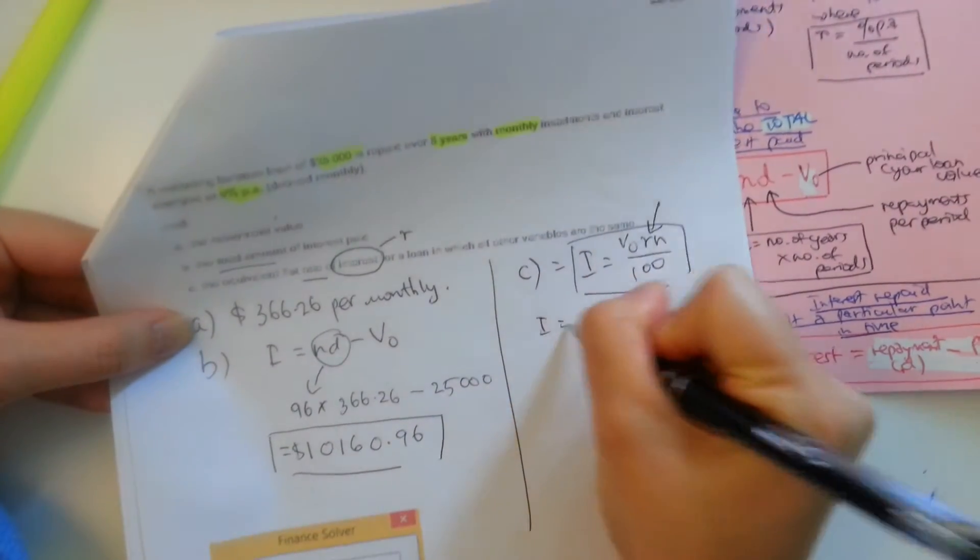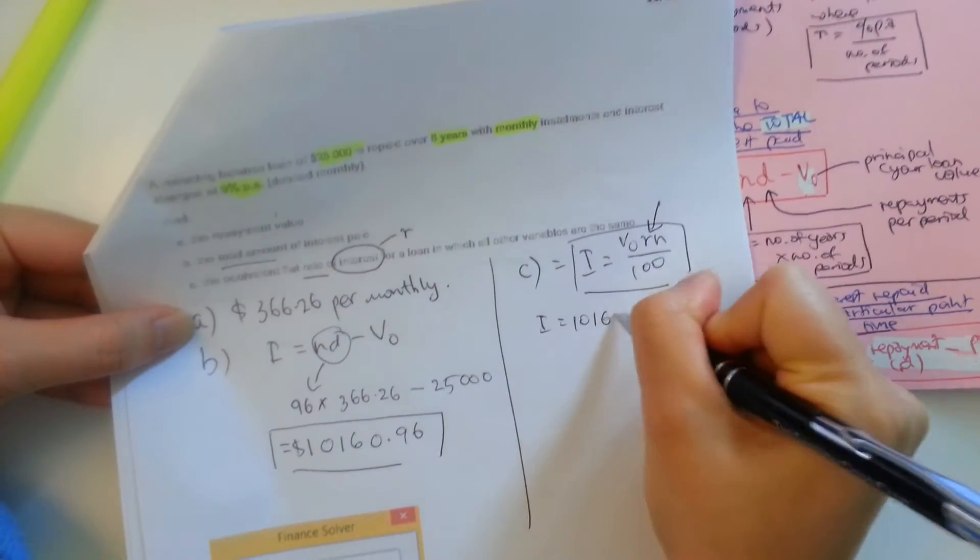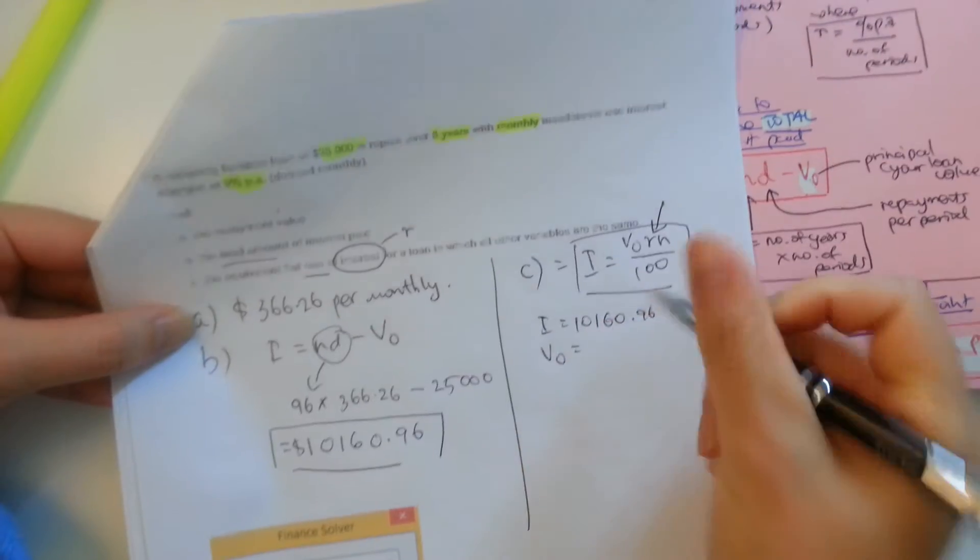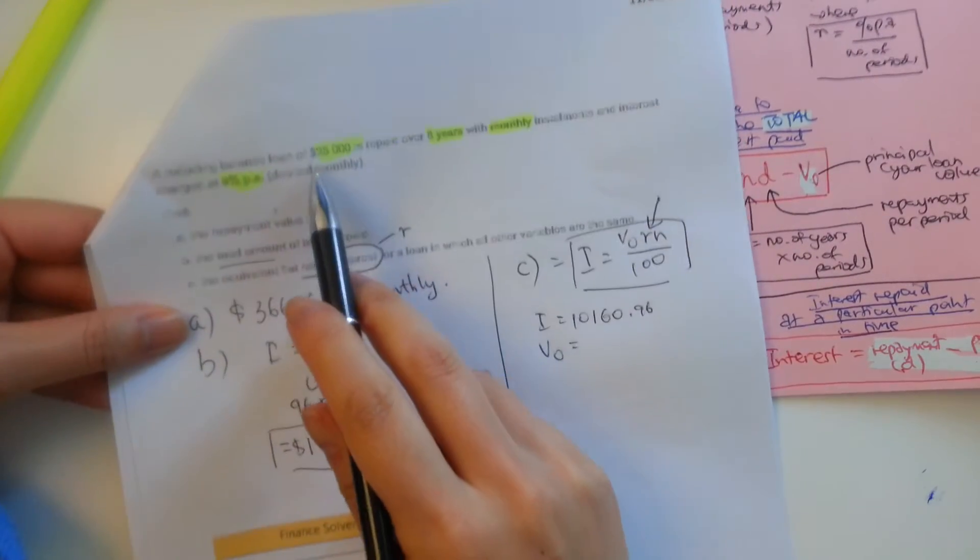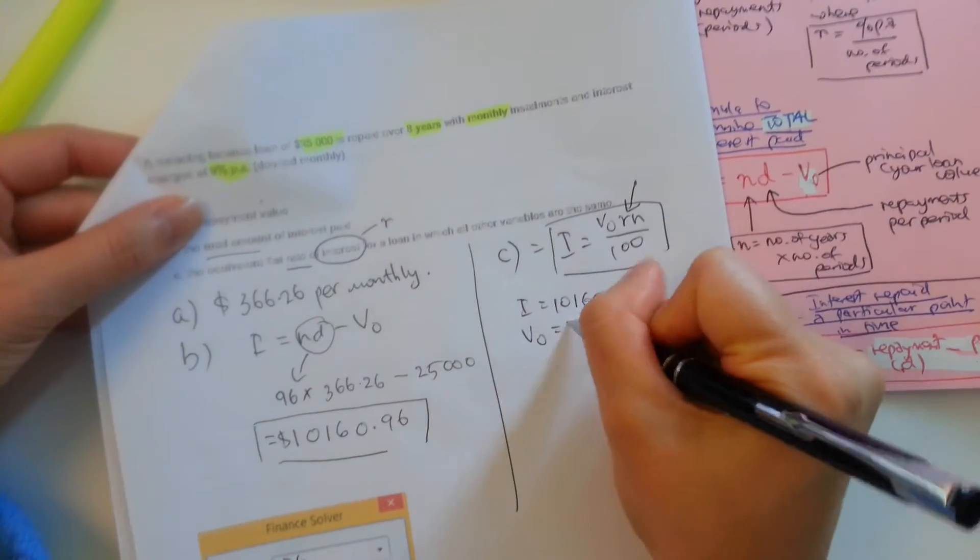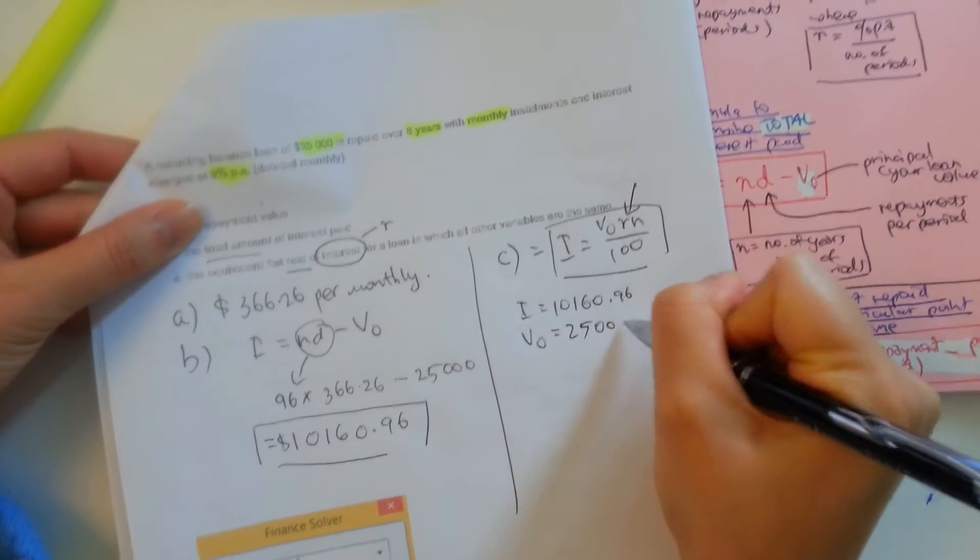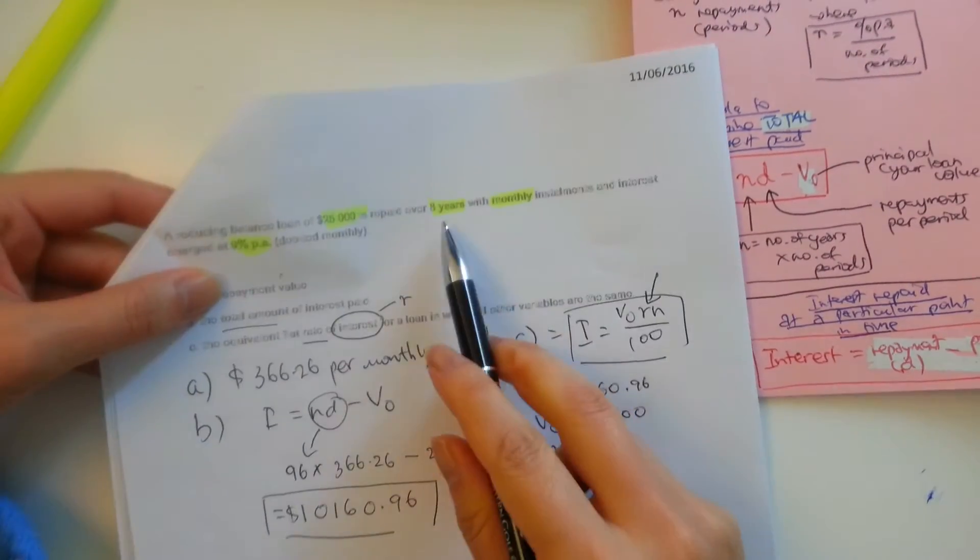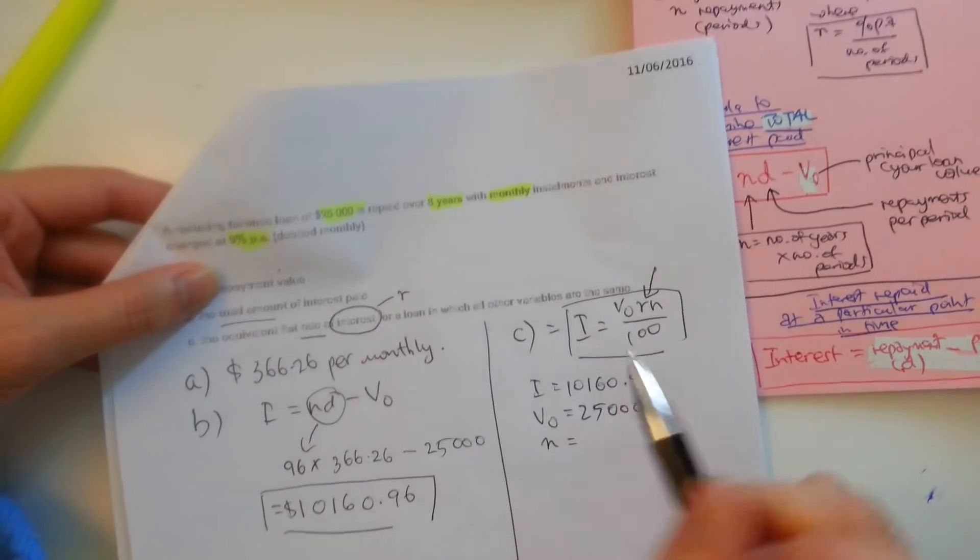So we want the interest to be the same as this condition. So we're going to set the I to 1,016, 0.96. We're going to set our V0, which is going to be the amount that we borrow to 25K. And the N is going to be 8 years, okay?